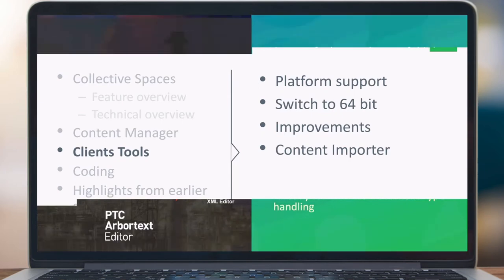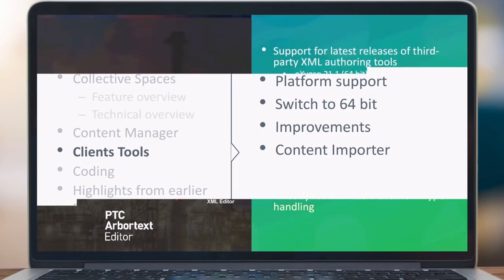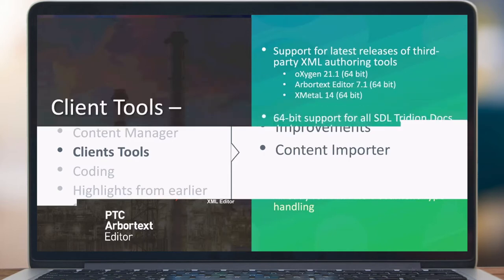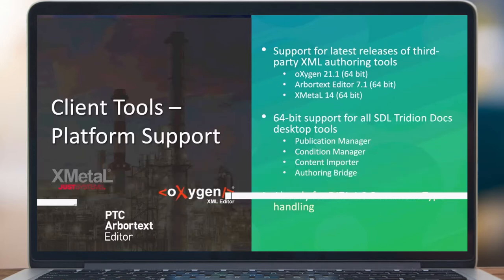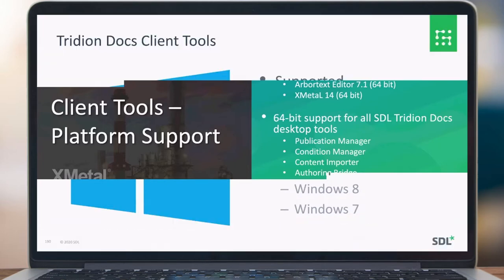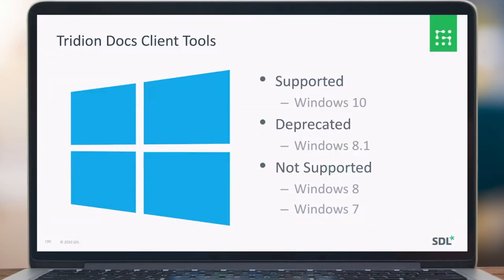For client tools platform support, we have support for the latest versions of third-party XML authoring tools like Oxygen, Arbortext, and XMetal. All Trillion Docs desktop tools are now 64-bit and capable of handling DITA 1.3 document types. For installation, only Windows is supported and the supported version is Windows 10. Windows 8.1 and Windows 7.0 and 8.0 are no longer supported.